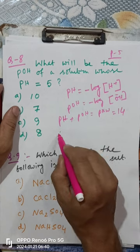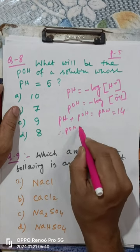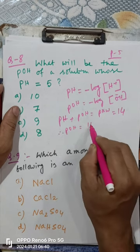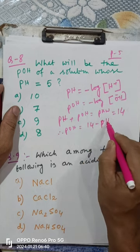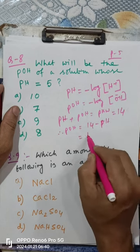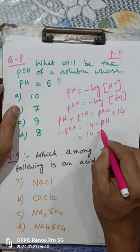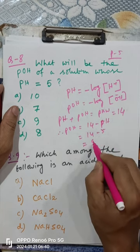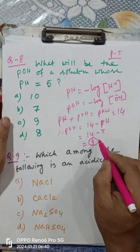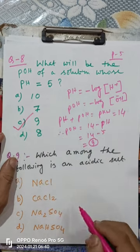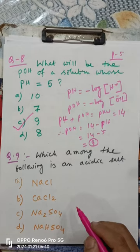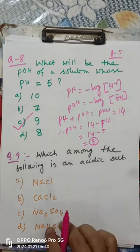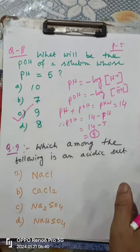Since pH is given as 5, pOH = 14 − pH = 14 − 5 = 9. So the answer is 9. The pOH of the solution whose pH equals 5 is 9.